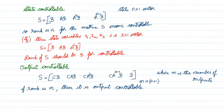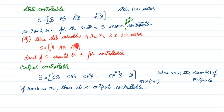For state controllability: I can control the state by the input. The controllability matrix S is formed as [B | AB | A²B | ... | A^(N-1)B]. If the rank of this matrix is equal to N, the system is completely state controllable. For example, if there are three state variables, N = 3, the matrix becomes [B | AB | A²B], and the rank should equal 3.